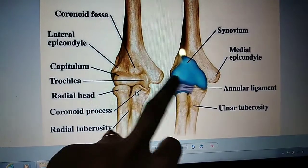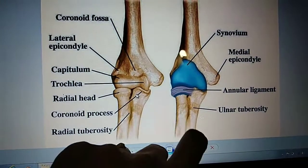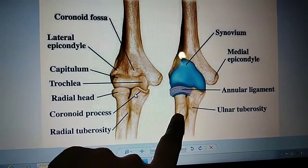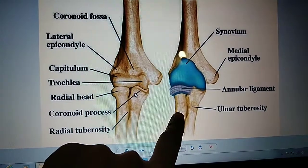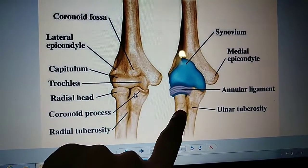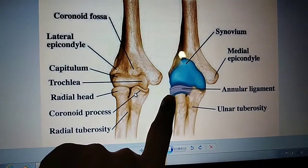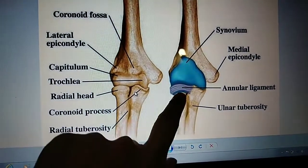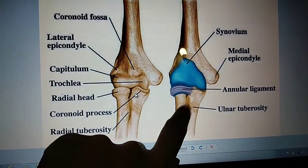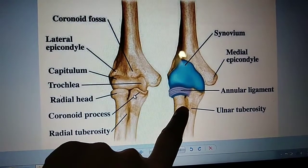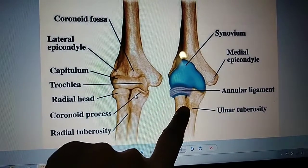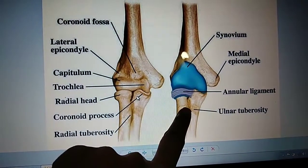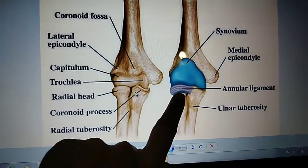Now, if we talk about peripheral nerves, there are three peripheral nerves which are important around the elbow: the radial nerve, the ulnar nerve, and the median nerve. These are relevant when discussing elbow dislocation.